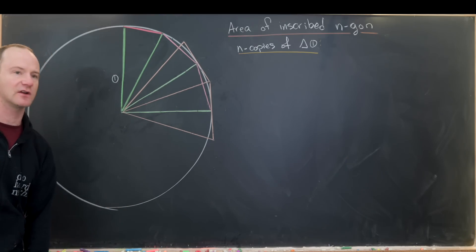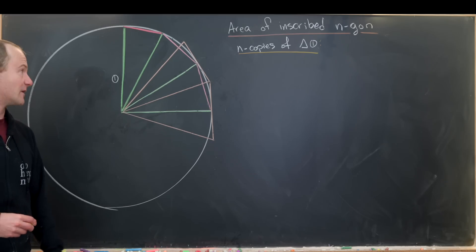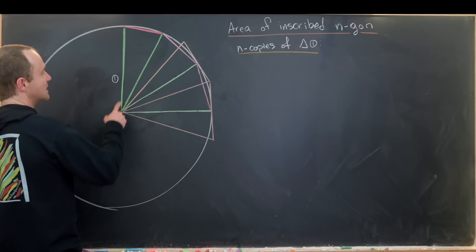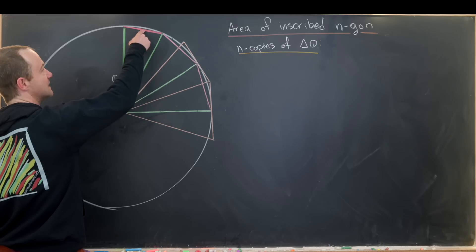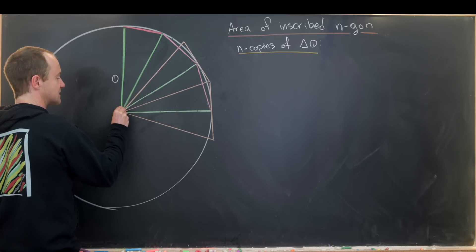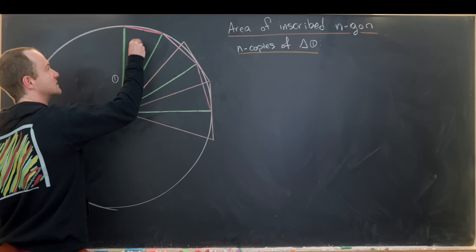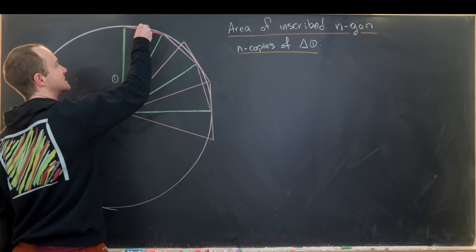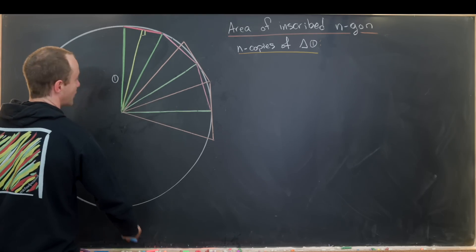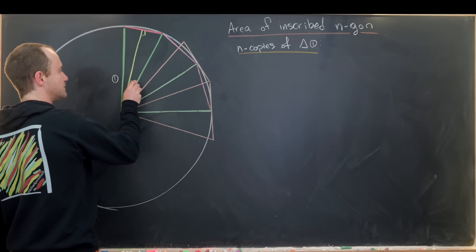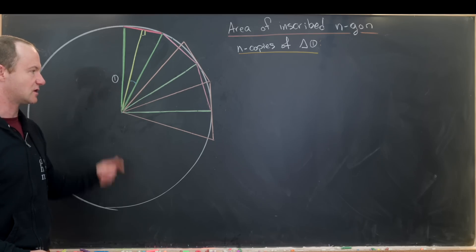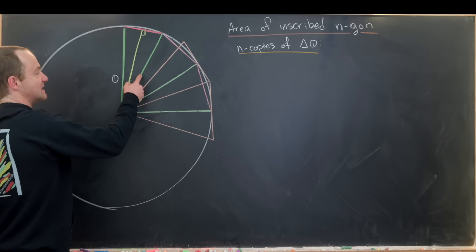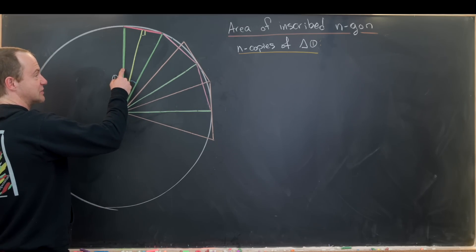We can calculate the area of a triangle using the one-half base times height formula, but we don't have the base or height directly. If we drop a perpendicular to the base edge, that gives us our height. This construction splits the circle into n pieces, and a circle has 2π radians around the whole thing, so the full wedge angle before bisecting was 2π over n.